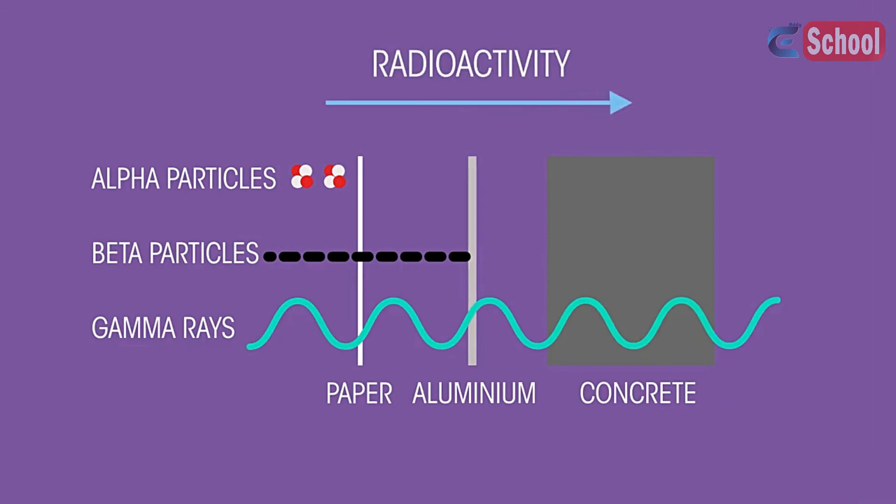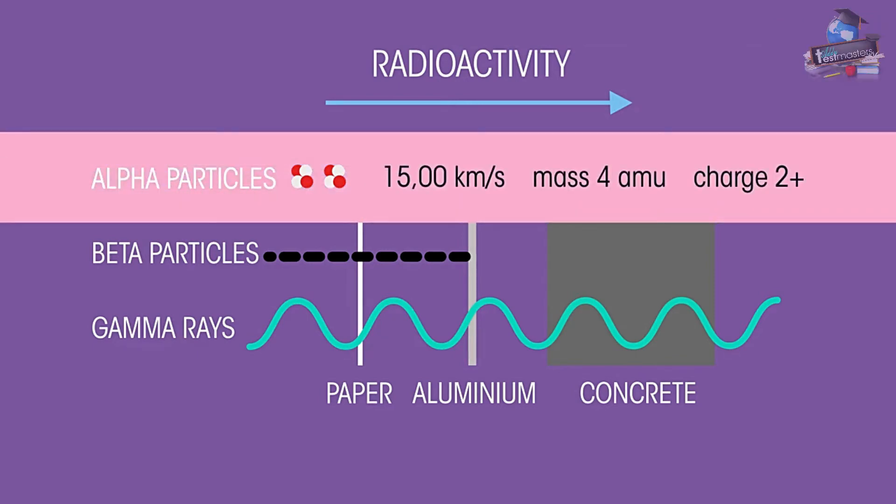So if we look at the characteristics of each radiation more closely, we can begin to understand why their properties are so different. Alpha is a slow moving helium nucleus made of two protons and two neutrons with a double positive charge.